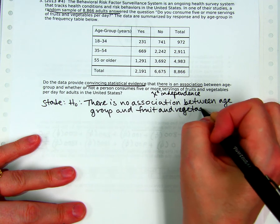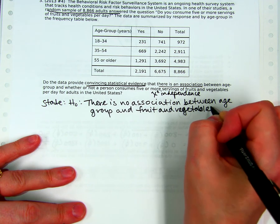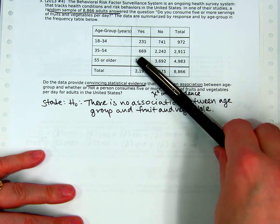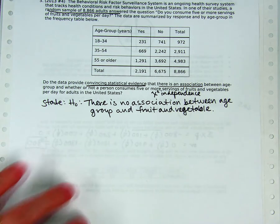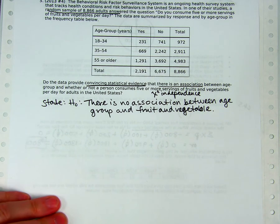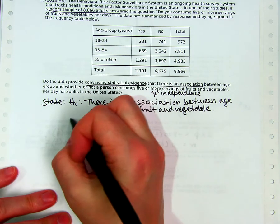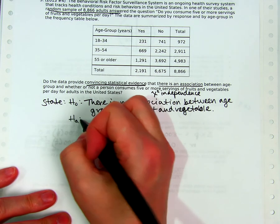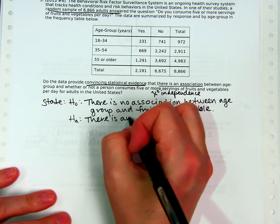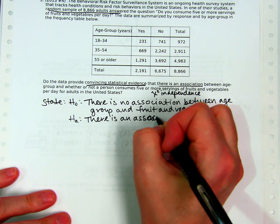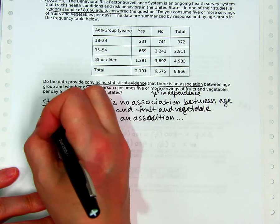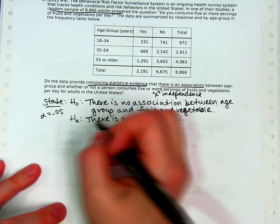And remember if we were doing homogeneity, we would write this slightly differently. We would say something about the different age groups all have the same probability or proportion of people who eat fruits and vegetables. And that would be if we had gathered separate samples from each age group. What we did is we gathered one sample and then we categorized two ways. Alternate is what they're asking us to prove: there is an association. And you could finish the sentence if you want or you could just put a dot dot dot. We're going to do alpha equals 0.05. This time I'll remember it at the beginning.